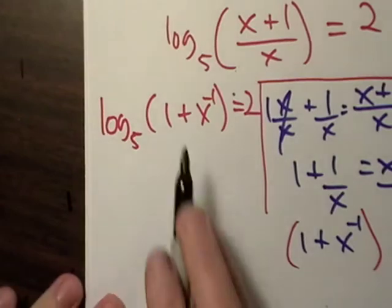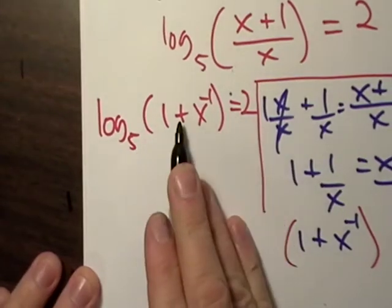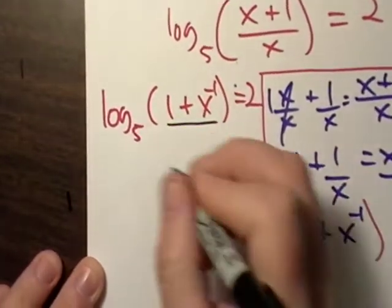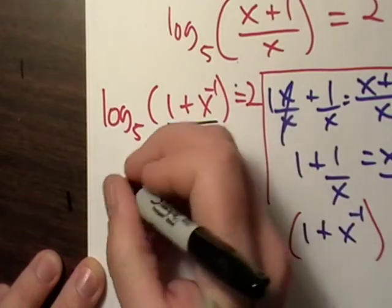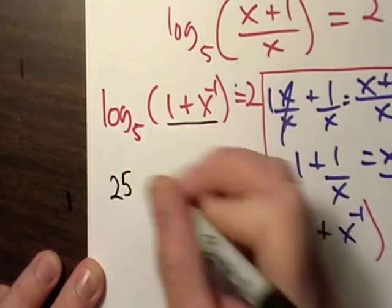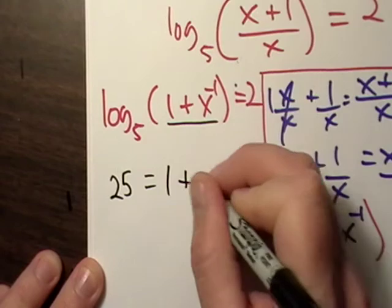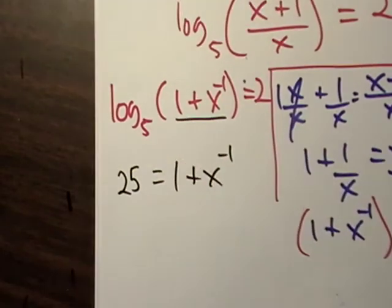But all it means is 5 to the second power equals this guy in here. So 5 to the second power is 25 equals 1 plus x to the negative 1.